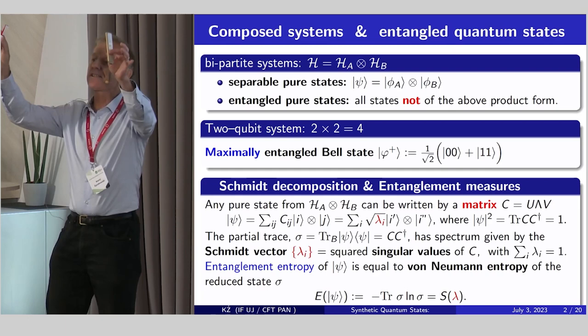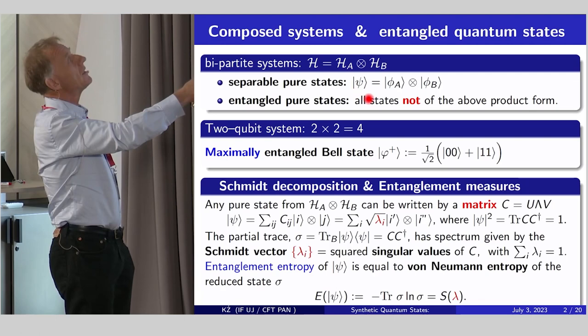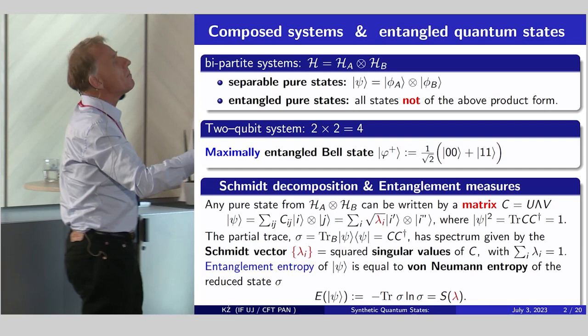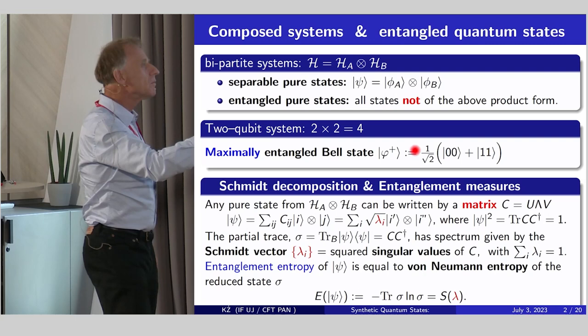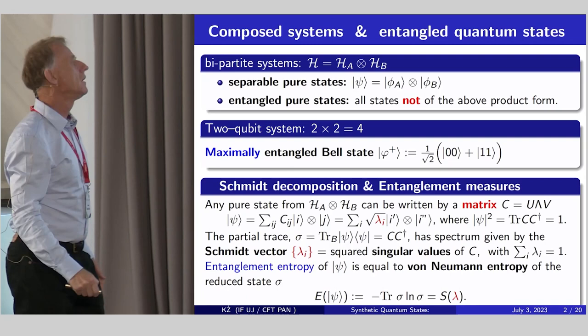Let me make a brief reminder. If you have a bipartite system, system A and system B, everything is simple. We can define product states. We say that such a pure state is separable if it has a product form, or other states are entangled. This is relatively easy to check. In the simplest possible case, we know there exists a maximally entangled Bell state. It means if we perform a measurement on one side, we can predict the outcome on the other side.